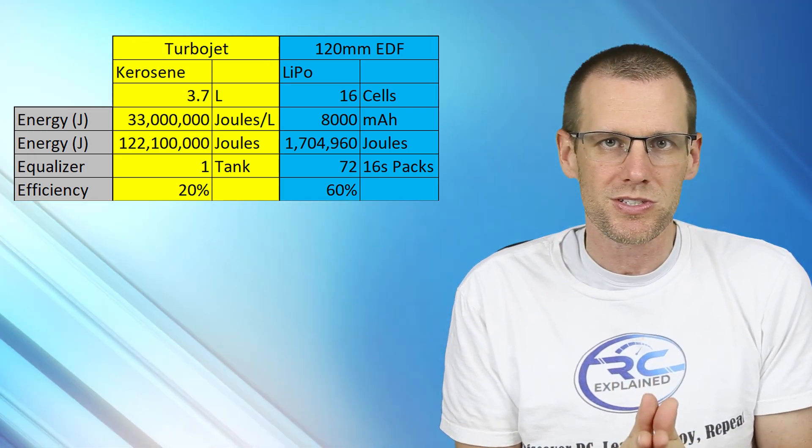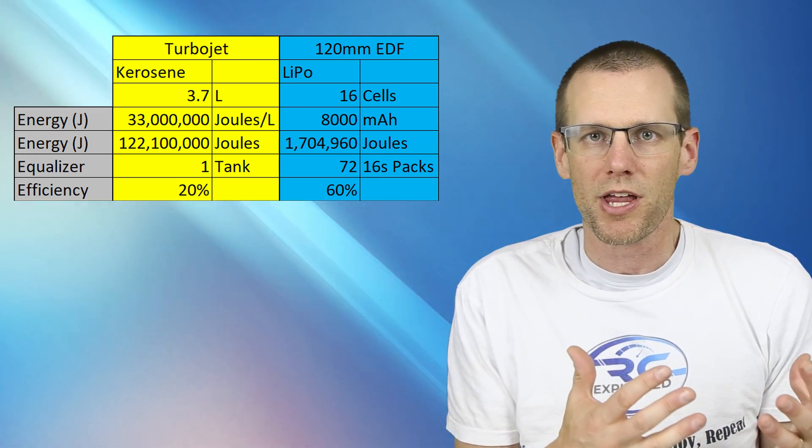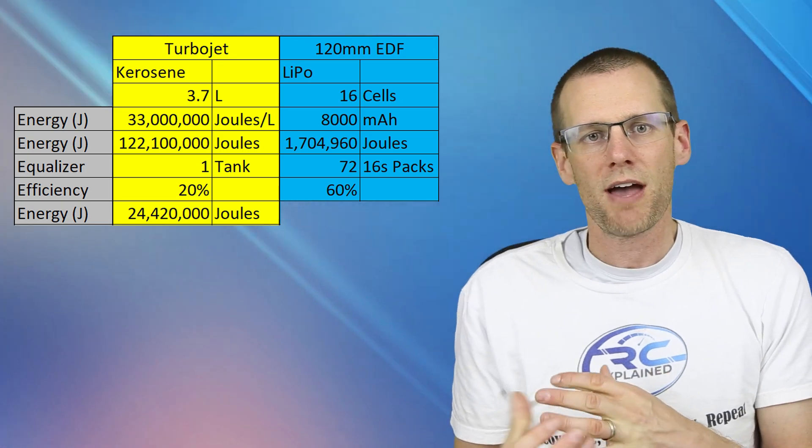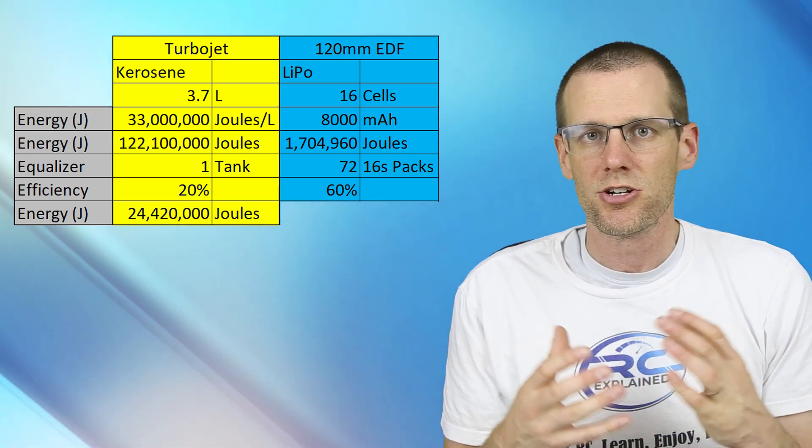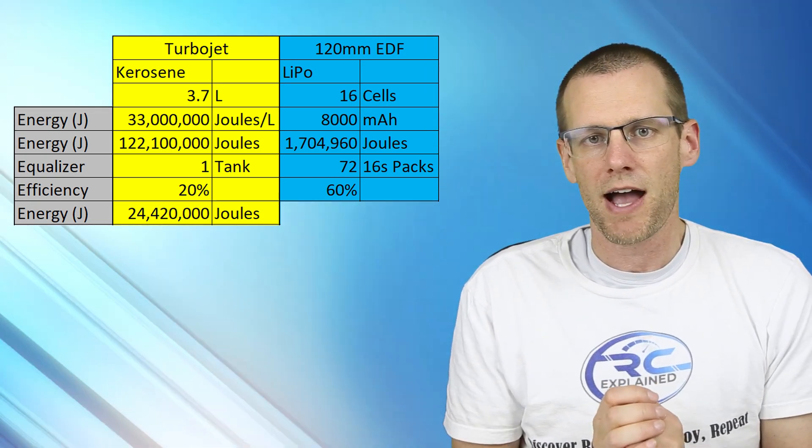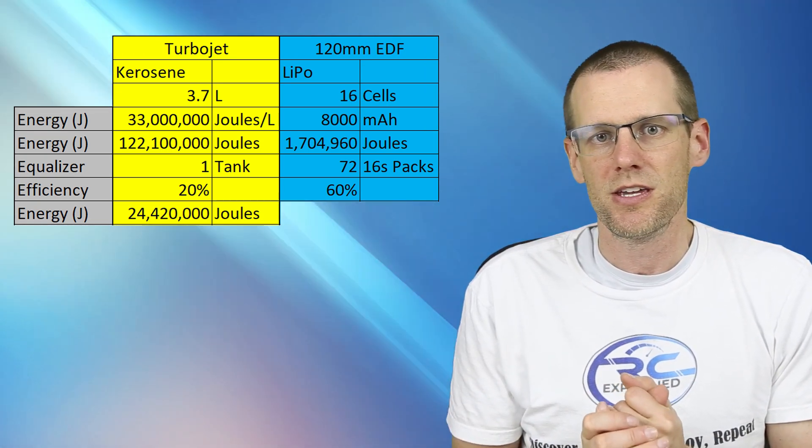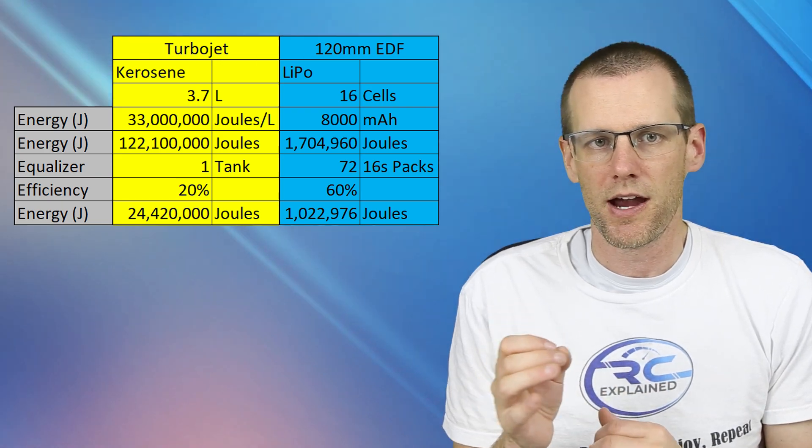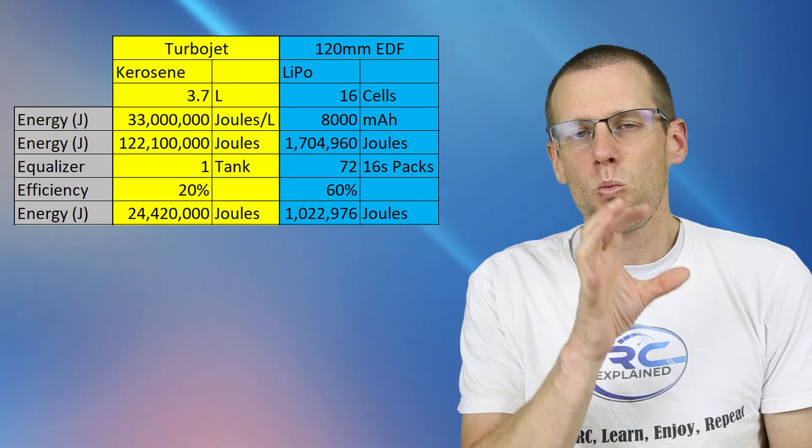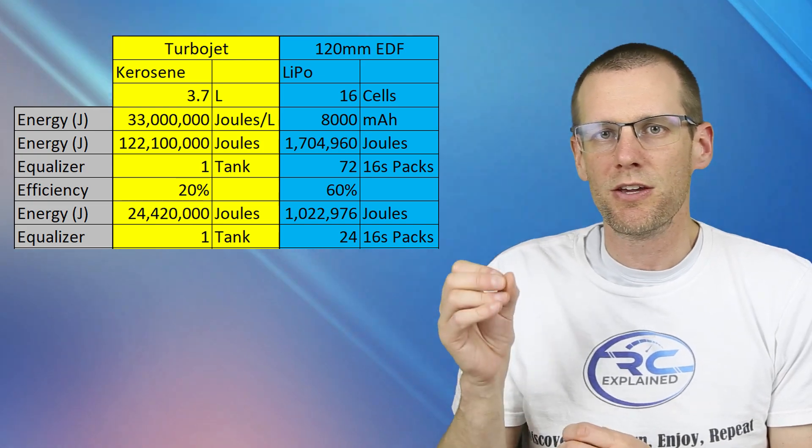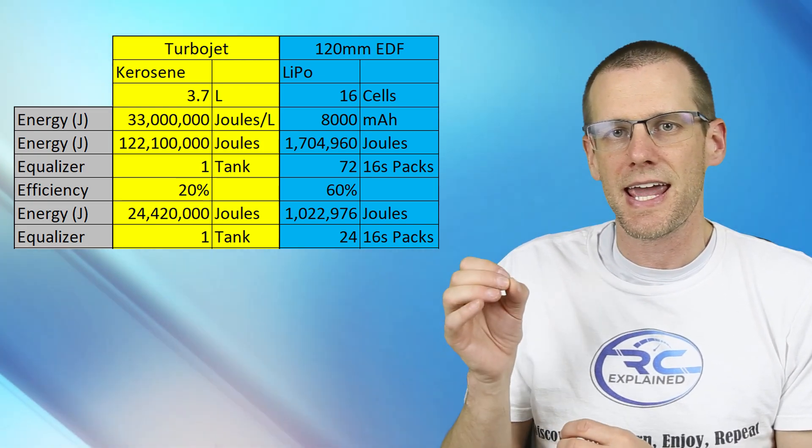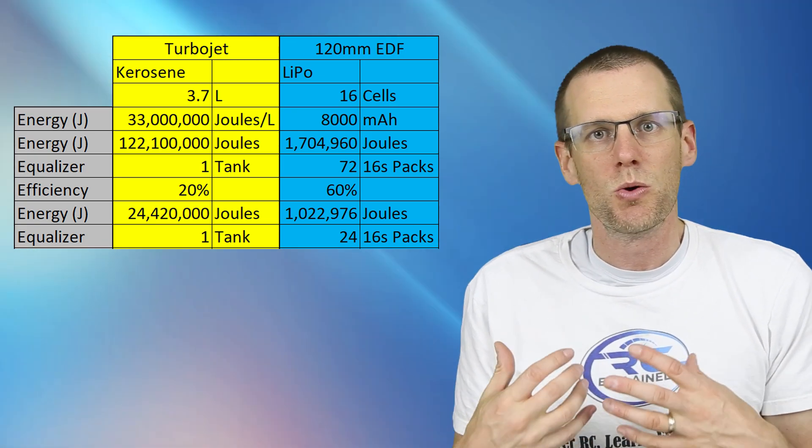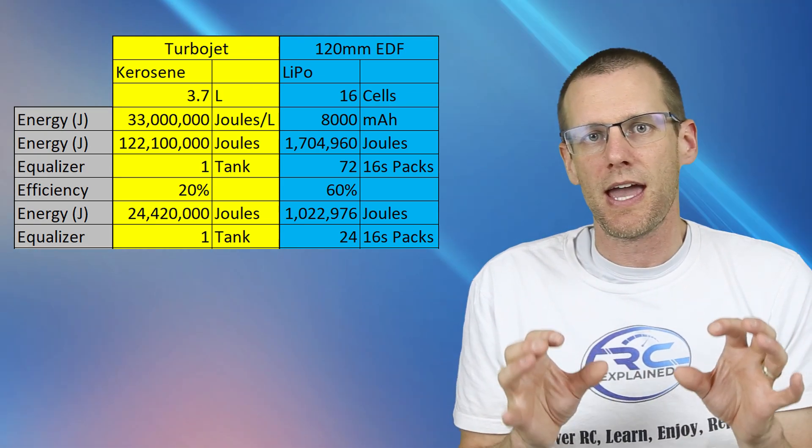So now we'll use those percentages, we're now going to multiply the original energy factor that we had by these percentages. And if we do that for the jet engine burning jet fuel, we have about 24.4 mega joules of energy now with that 20% efficiency factor. And for our 120 millimeter EDF system, we're going to have 1.02 mega joules of energy there. Now looking at the equalizer here, we got one tank of jet fuel essentially equal to 24 of these 16 cell, eight amp hour packs, that's still kind of mind blowing how much more battery pack energy we would need in order to actually equalize out the energy there.